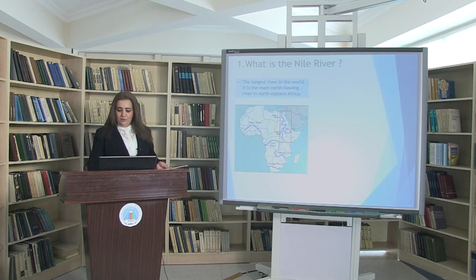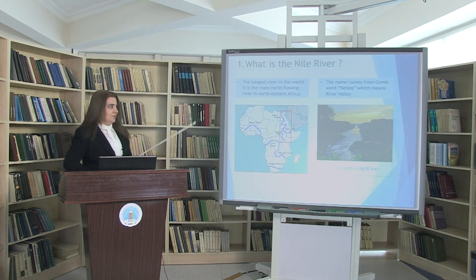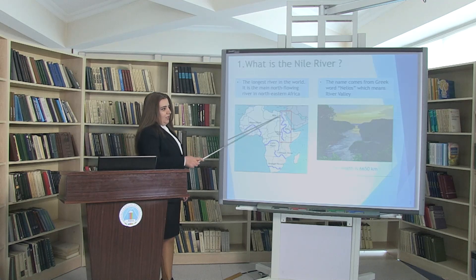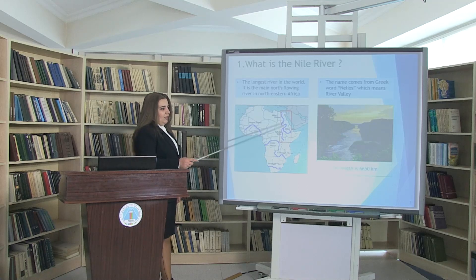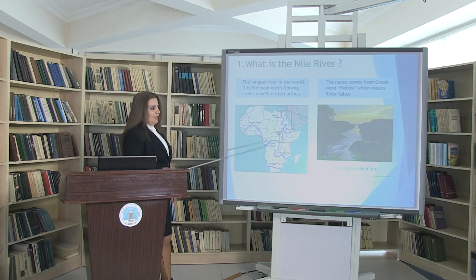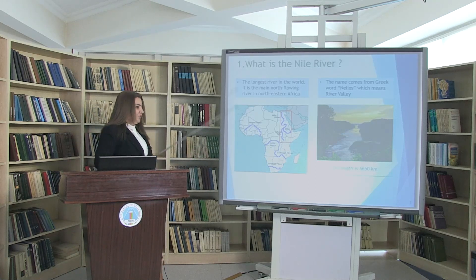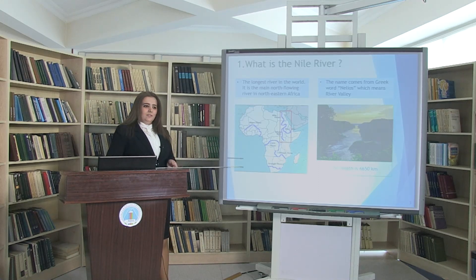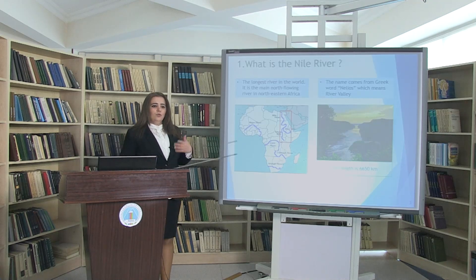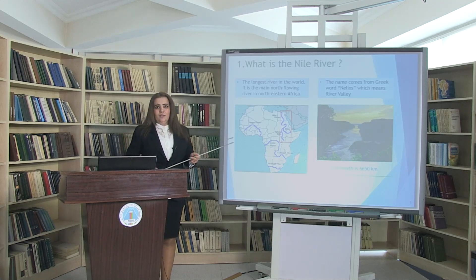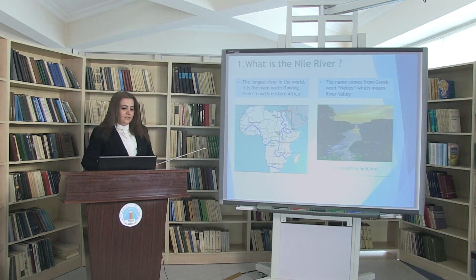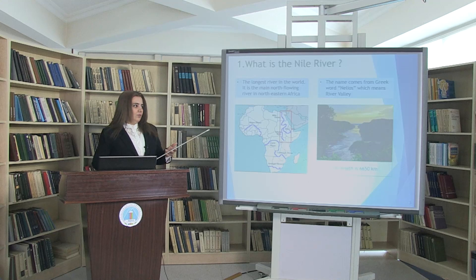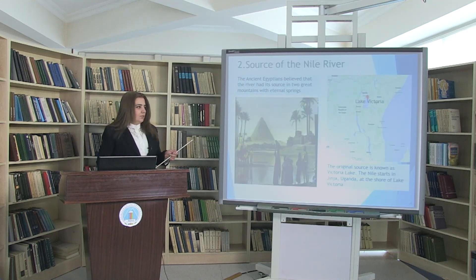First of all, I want to show you where the Nile River is situated. It is the longest river in the world, situated in the northeastern part of Africa. It is called a north-flowing river. The length is six thousand six hundred and fifty kilometers. The origin of the name comes from a Greek word 'Nailos,' and it is also called River Valley.